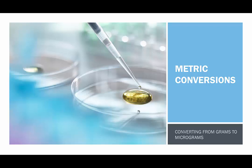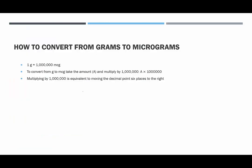Hello and welcome to HelpYourMath.com. In this video on metric conversions, we're going to look at converting from grams into micrograms. First, let's just go over what the conversion looks like. One gram is equivalent to one million micrograms. Microgram is a teeny tiny unit — it takes a million of them to equal one gram.